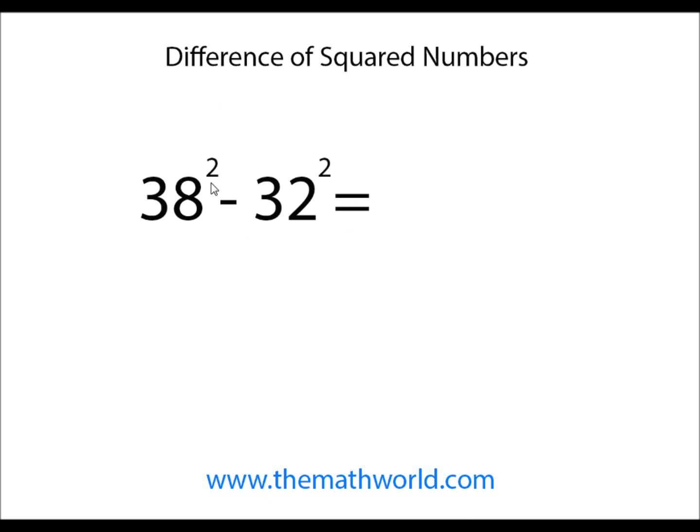First example, we have 38 squared, and we're trying to subtract 32 squared from it. Pretty easy trick. All you need to do first is add these two numbers.